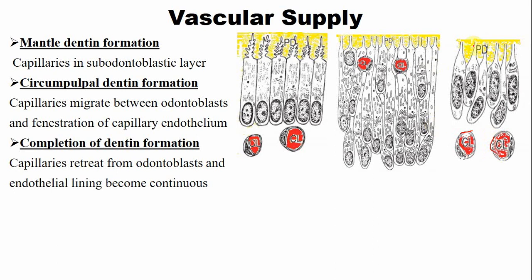Dentine formation continues throughout life, meaning the size of the pulp chamber is reduced because of continuous dentine formation, but the rate of formation becomes very slow.